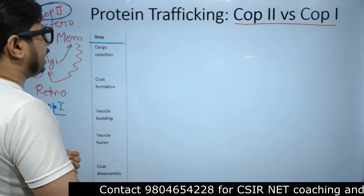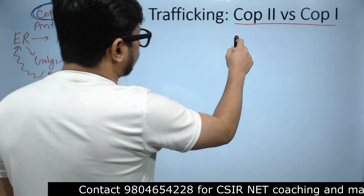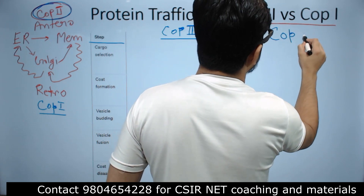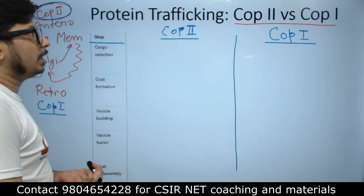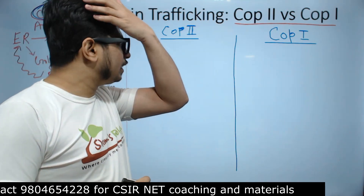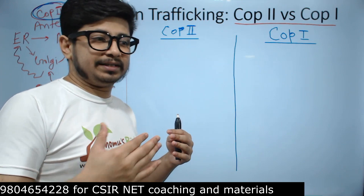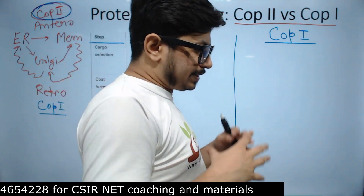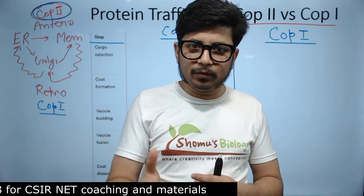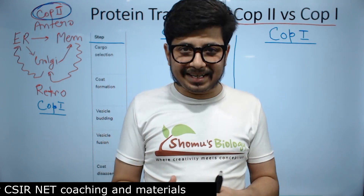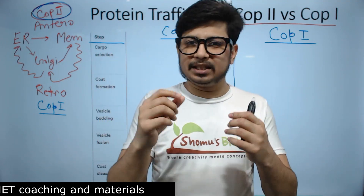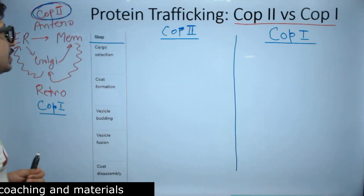The first step is cargo selection. How exactly the cargo is selected differs between COP1 and COP2. In COP2, cargo selection is done right after the protein is synthesized. Cells have a unique tagging system — cells need proof of address to deliver proteins, similar to how addresses work. These are known as sequence tags or localization signals.